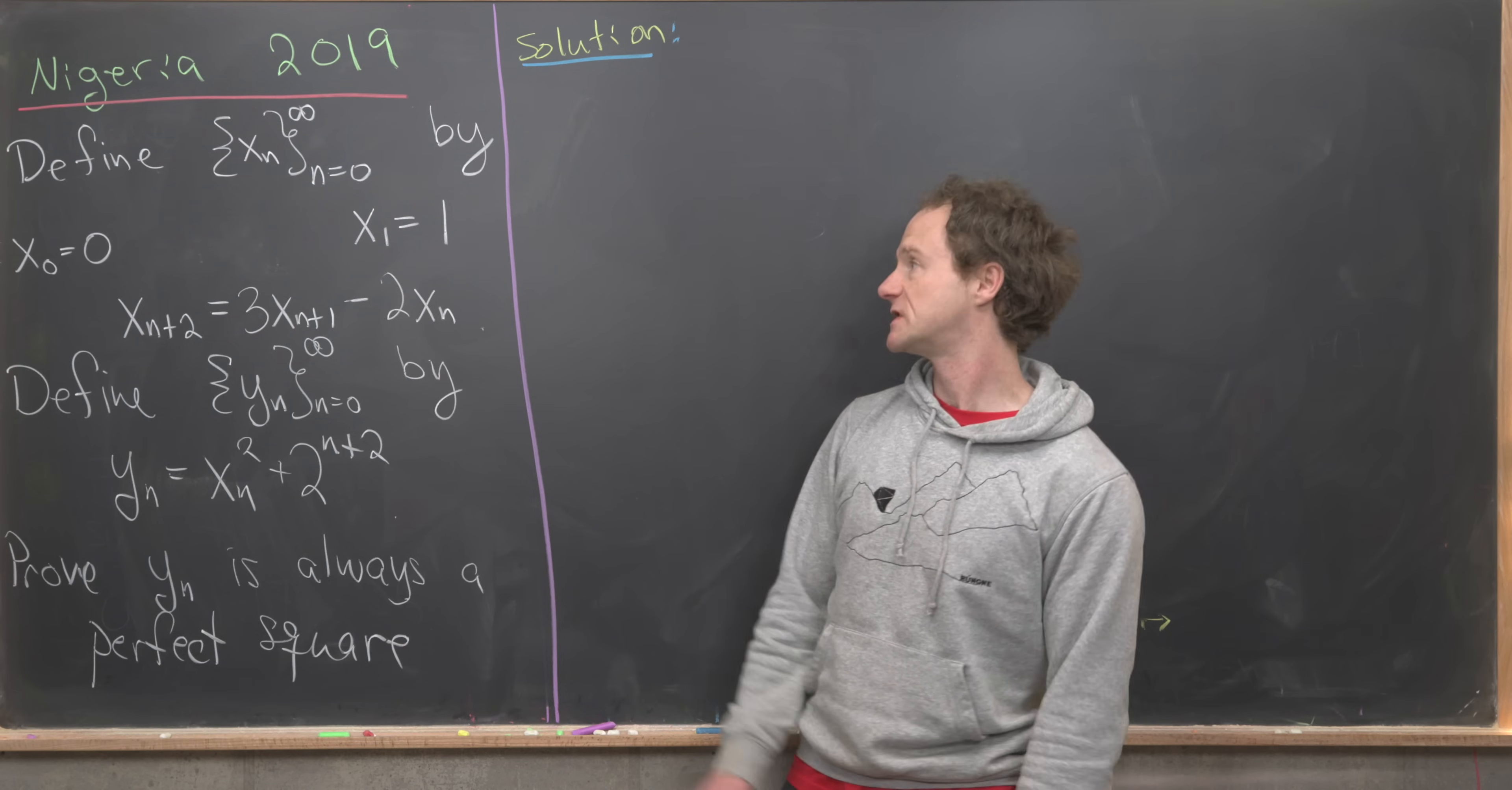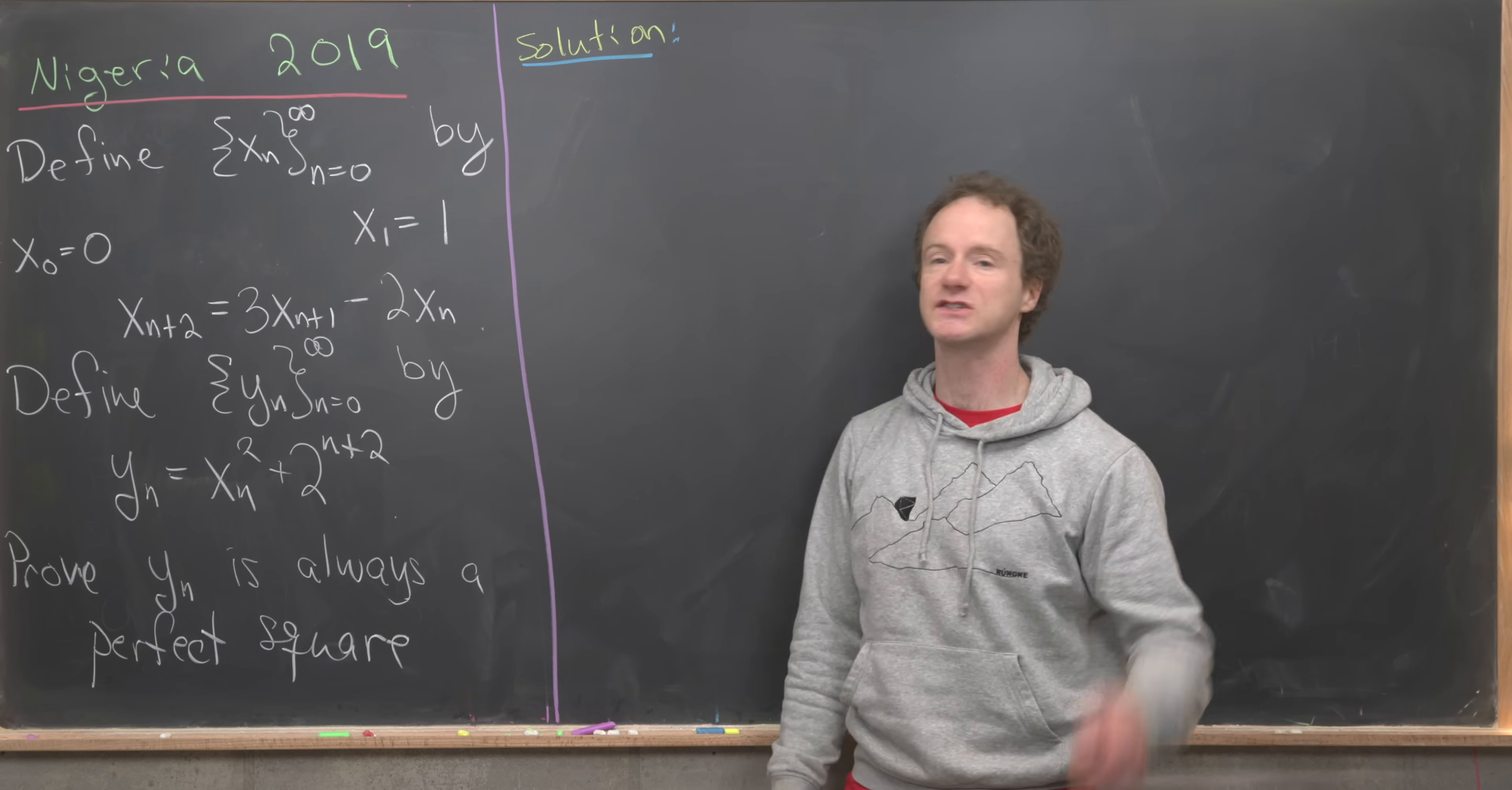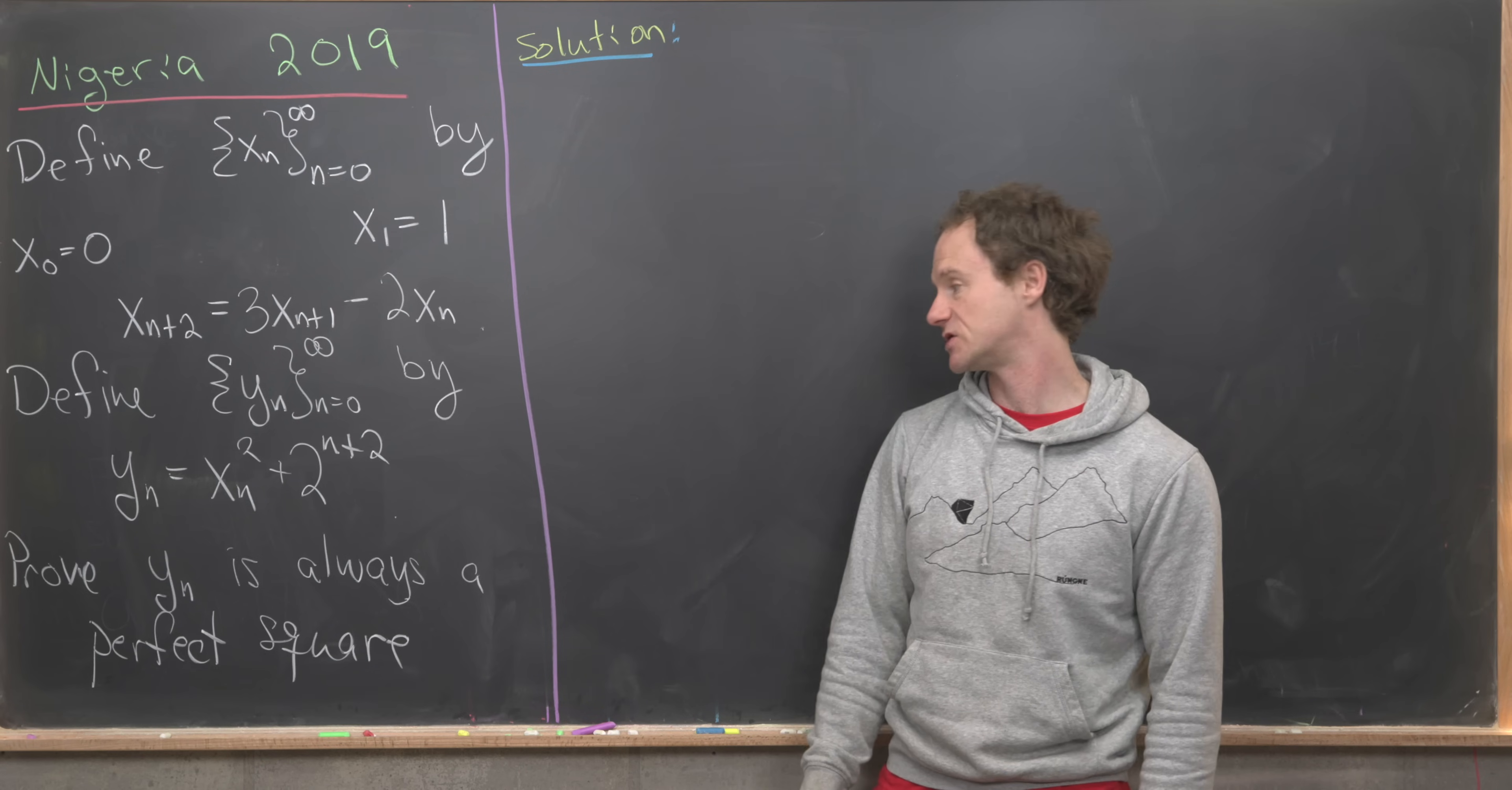Let's first define x sub n by x naught equals 0 and x1 equals 1, and then we have the following two-step recursion: x sub n plus 2 equals 3 times x sub n plus 1 minus 2 times x sub n. Next, we'll define a companion sequence y sub n by y sub n equals x sub n squared plus 2 to the n plus 2.